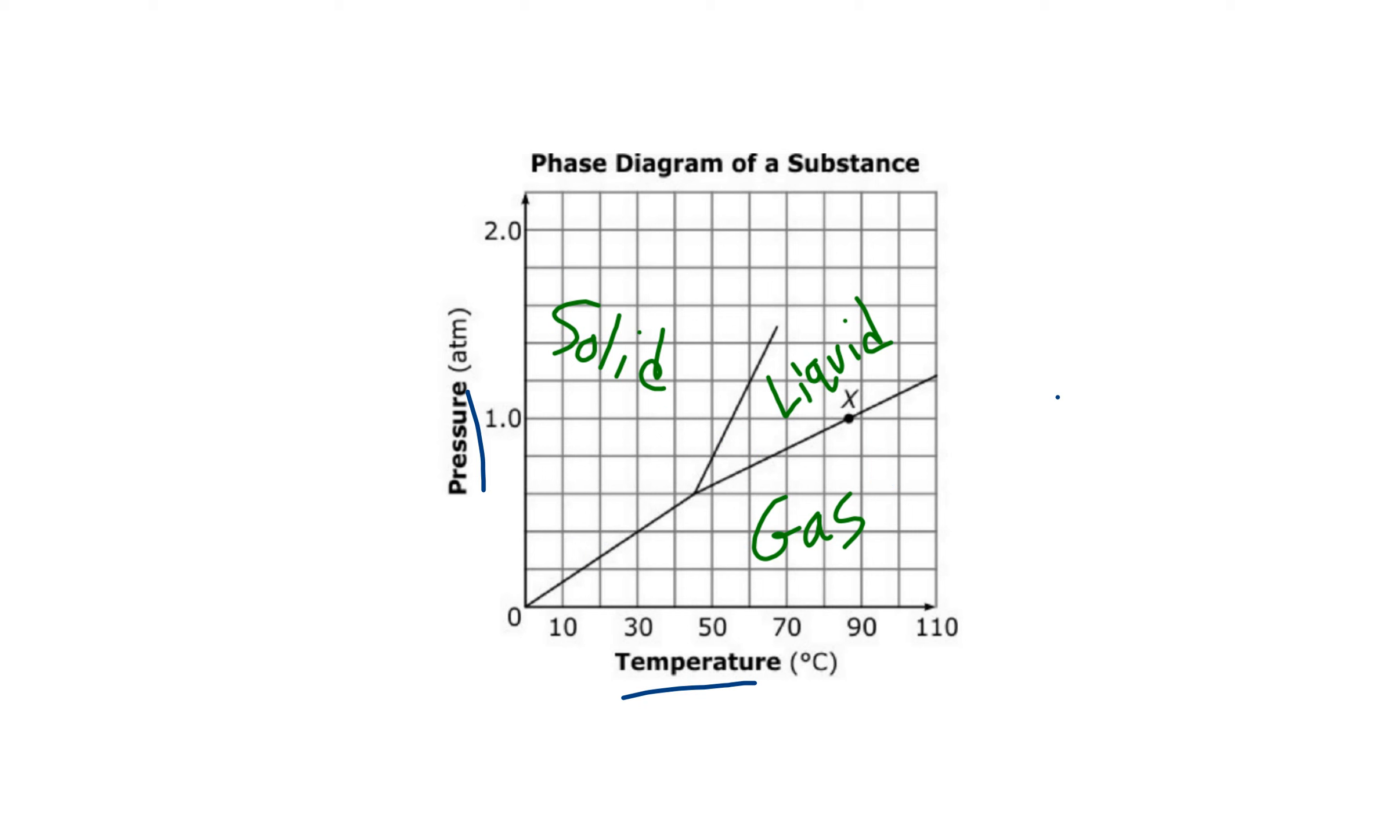Now, if it is on the line, then it's at equilibrium between two states. So for example, if we were crossing from here to here, we went from a solid to a gas. We call that sublimation. That's what dry ice does. If we're going this way, we call that deposition.